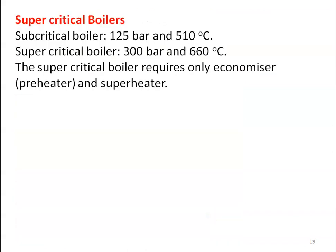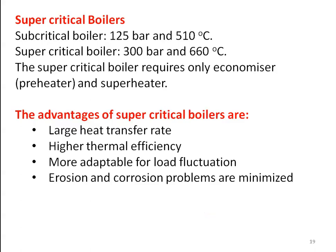Depending on the boiler pressure, we can classify boilers into subcritical and supercritical. For a subcritical boiler, the pressure is around 125 bar and temperature is 510 degrees Celsius. For a supercritical boiler, the pressure is above 300 bar and temperature is 660 degrees Celsius. The supercritical boiler requires only an economizer and the superheater — sometimes there is no evaporator; we have a number of tubes through which water is heated and converted into steam. The advantages of a supercritical boiler are: large heat transfer rate, higher thermal efficiency, more adaptable for load fluctuation, and erosion and corrosion problems are minimized.